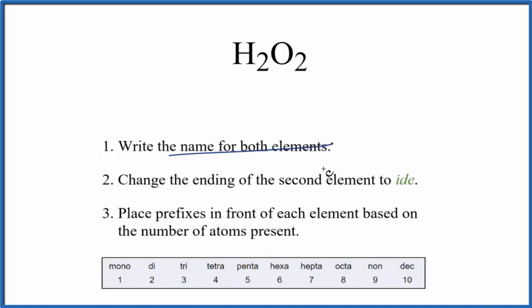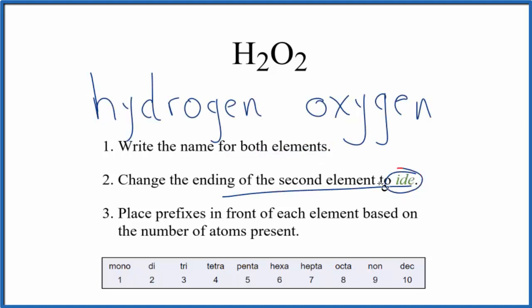We'll write the name for both elements first. Then on the second element, we're going to change the ending to ide. So we're going to cross this out, write I-D-E. That gives us hydrogen oxide.